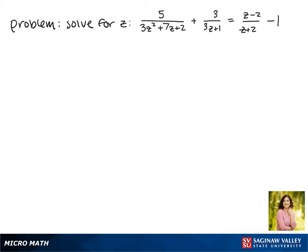Today we'll be solving for z in the equation: 5/(3z² + 7z + 2) + 3/(3z + 1) = (z - 2)/(z + 2) - 1.